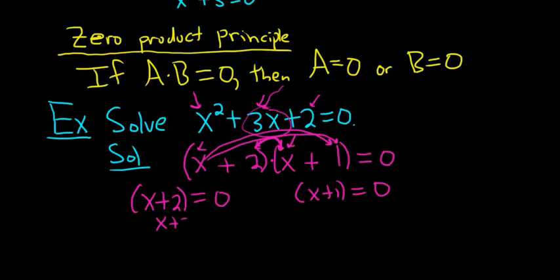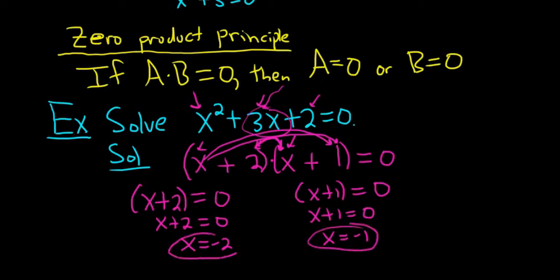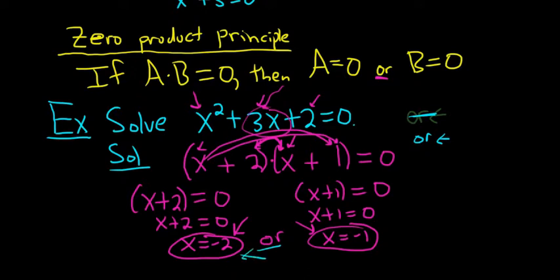We have a product equal to 0, so we invoke the zero product principle and set each factor equal to 0: x plus 2 equals 0, and x plus 1 equals 0. Solving gives x equals negative 2 and x equals negative 1 — those are both answers. In mathematics, 'or' means one or the other or both, so it's not like the 'or' in English. There is an 'or' in math that is like the English or — it's called XOR, which means one or the other but not both.